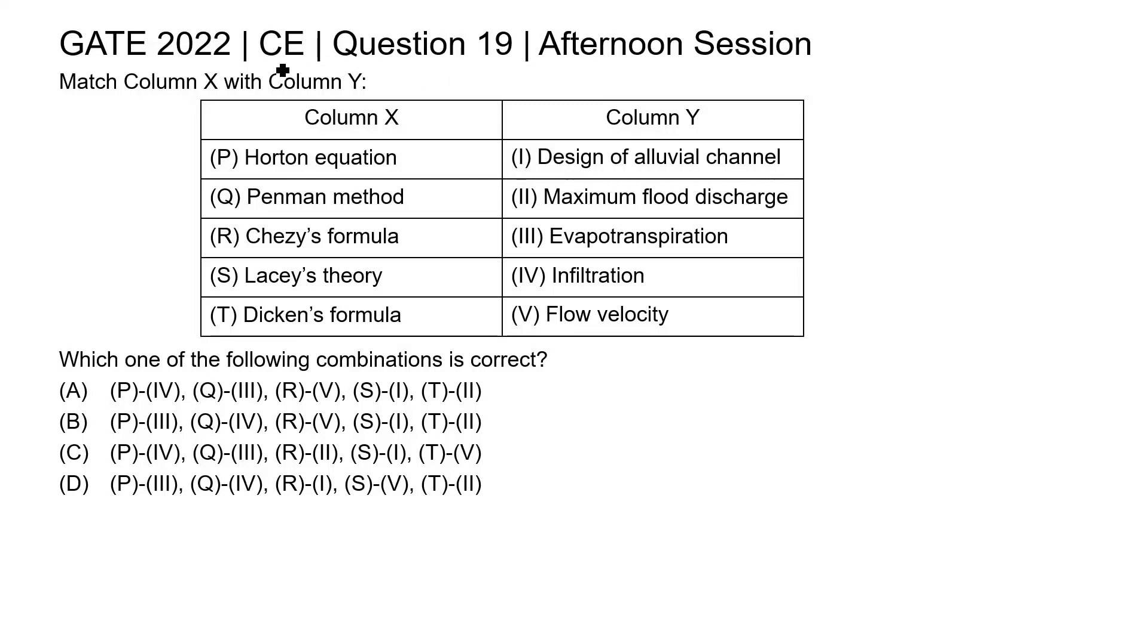This is question 19 of civil engineering paper of GATE 2022 afternoon session. Match column X with column Y. Column X: Horton equation, Pinman method, Chez's formula, Lacey's theory, Dickens formula. Column Y: design of alluvial channel, maximum flood discharge, evapotranspiration, infiltration, flow velocity. Which one of the following combinations is correct?